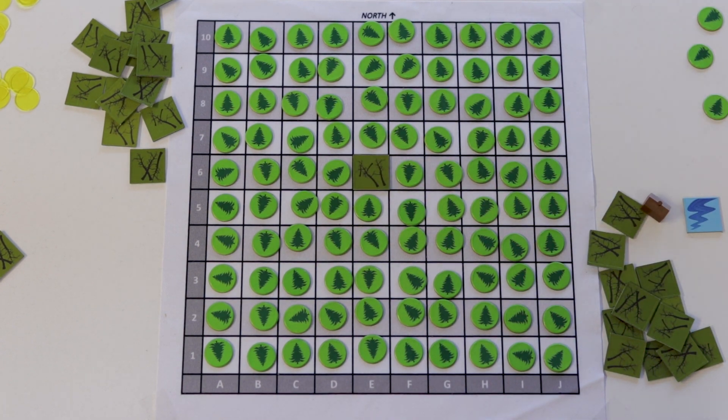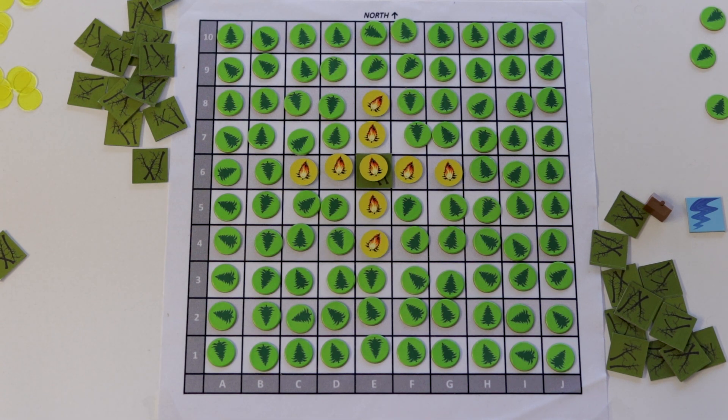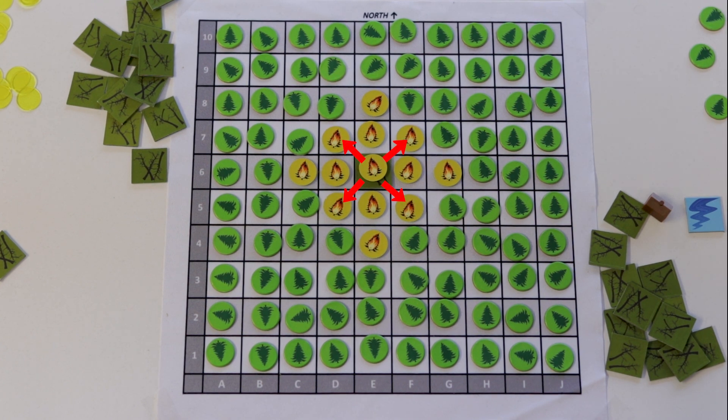Once a square of dead wood catches on fire, it spreads farther horizontally and vertically than normal, two squares instead of one. It still only burns one square in the diagonal direction.